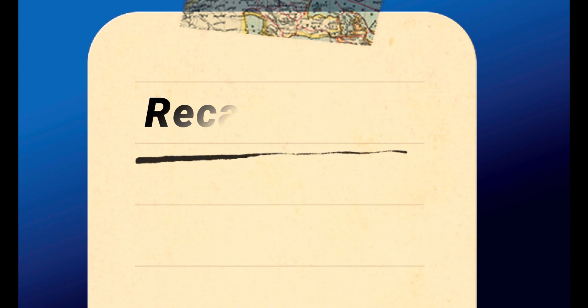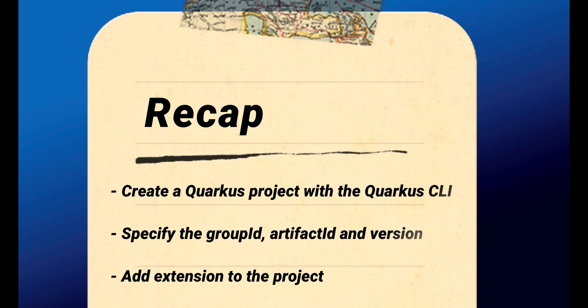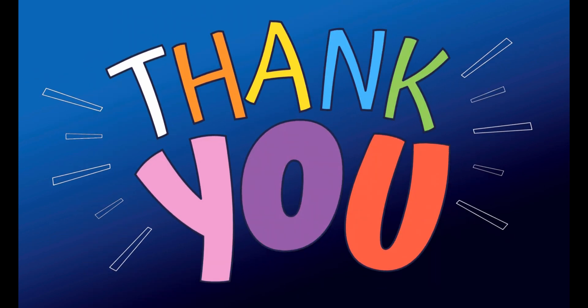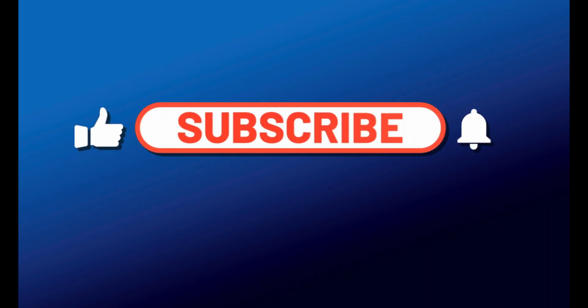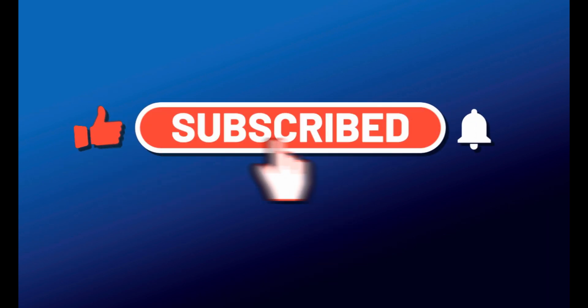Let's do a recap. Today you learned how to create a Quarkus project with the Quarkus CLI using default parameters and also by specifying the group ID, artifact ID, and version. You also learned how to list all available extensions and add a new extension to your application. In the next video, you will use the Quarkus CLI to do even more fun stuff. Thanks for watching, and don't forget to subscribe to my channel to stay updated. See you in the next video.